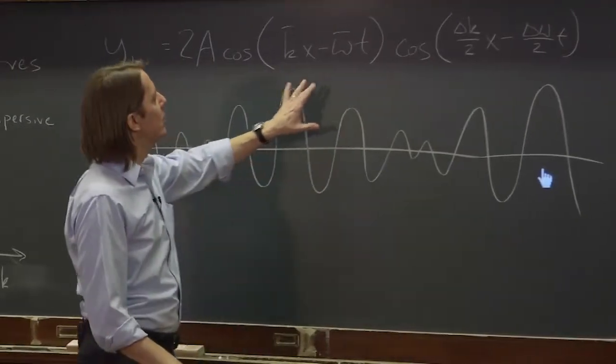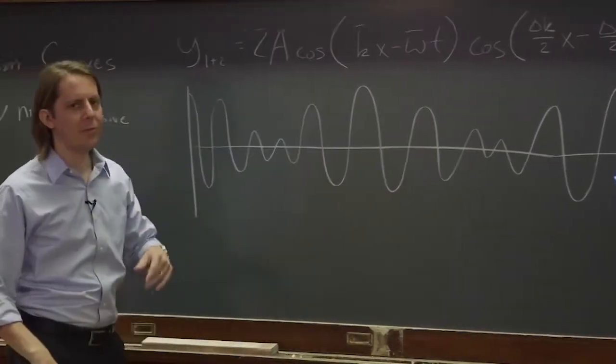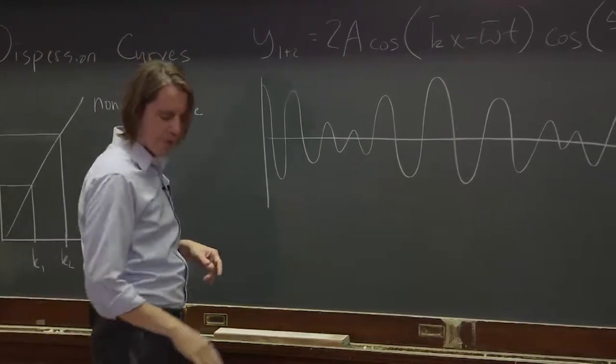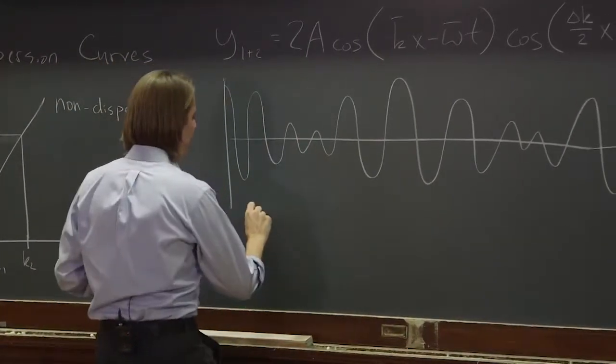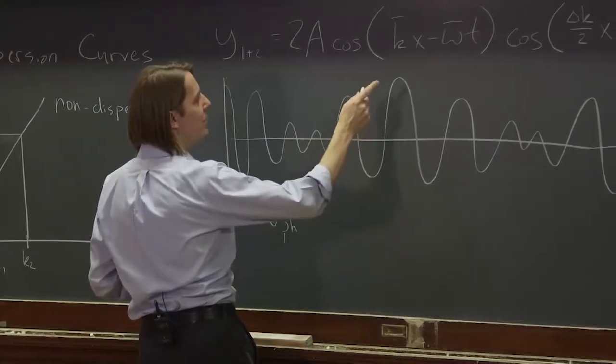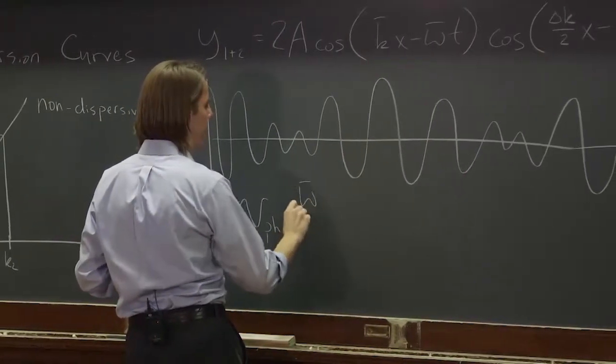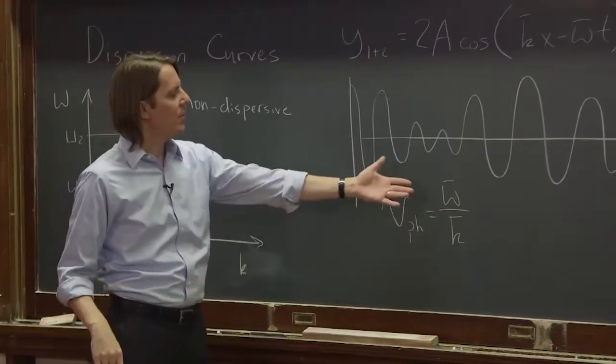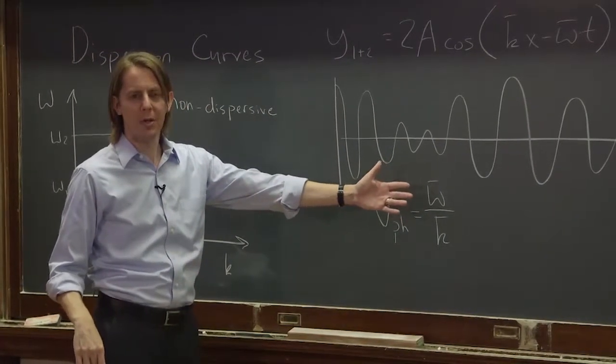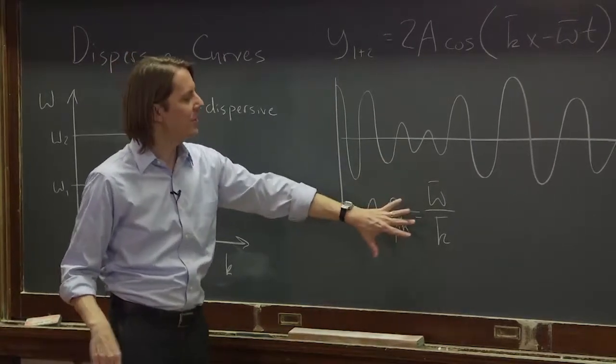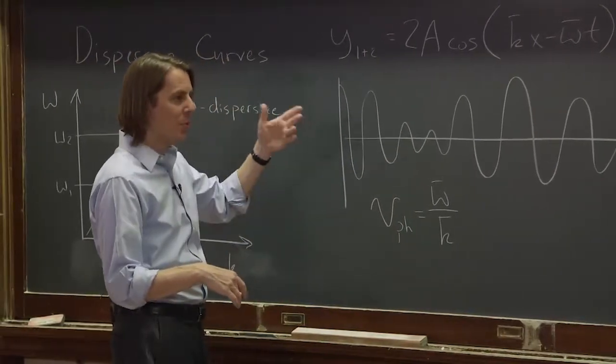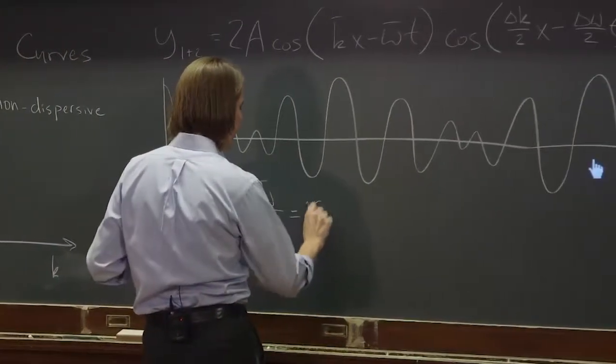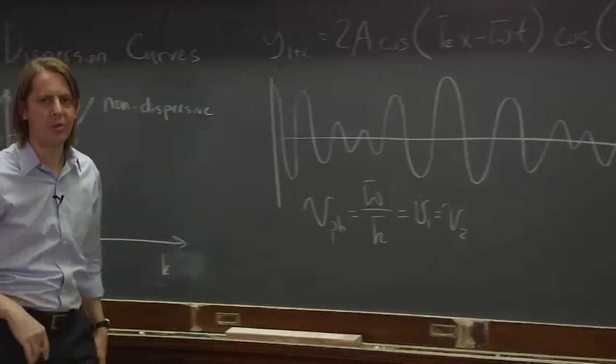We have the velocity of the average terms. So the velocity of the average terms would be the phase velocity in this case, what we'd call it. So that would be omega average over k average. And really, since that ratio is the same for omega 1 k1 and omega 2 k2, that's basically just equal to what it was before. V1 equals V2. Those are all the same.